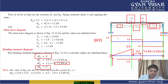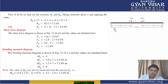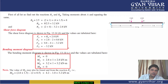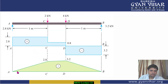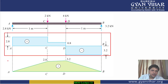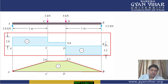So the bending moment at D is 3.2 kN·m. Now joining all the calculated points — zero at A, 2.8 at C, 3.2 at D, and zero at B — we get the bending moment diagram. The diagram rises from A to D and then falls back to zero at B.